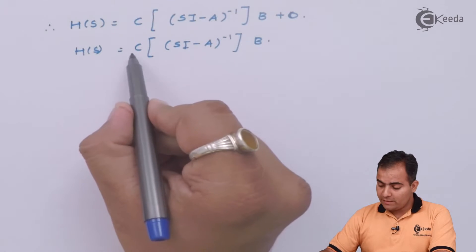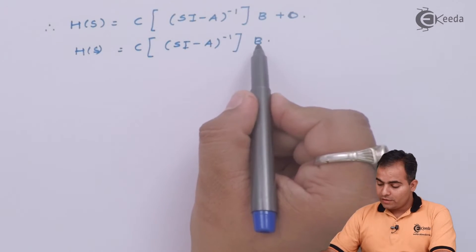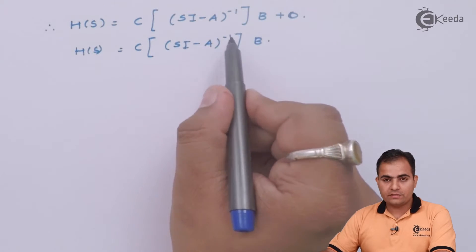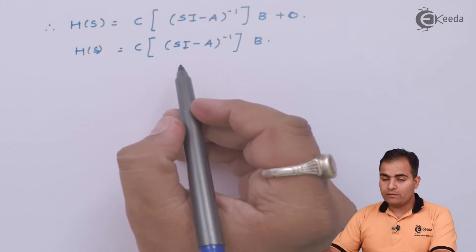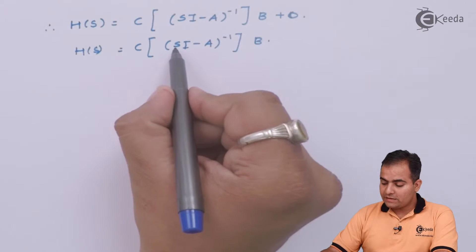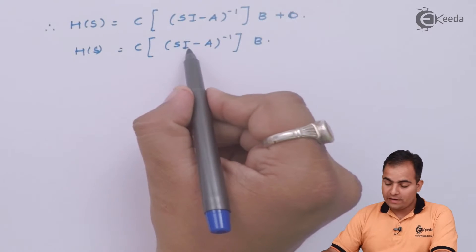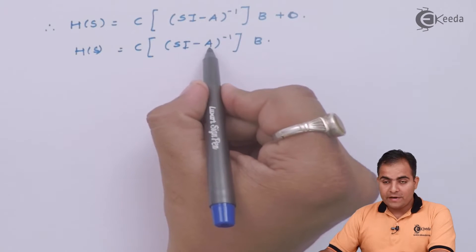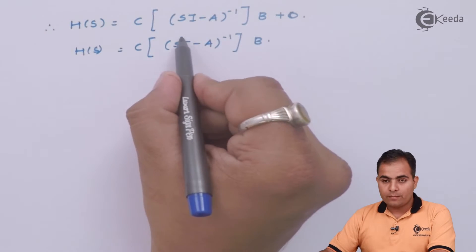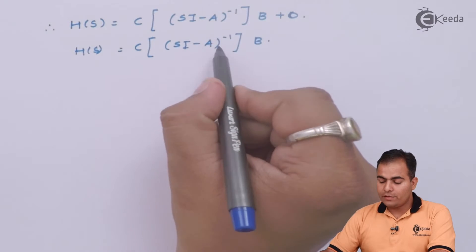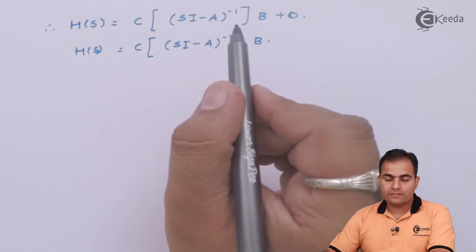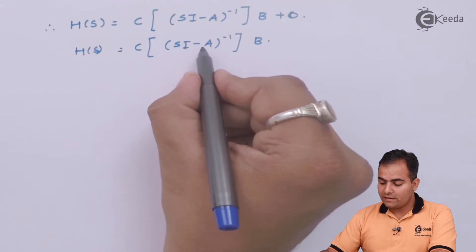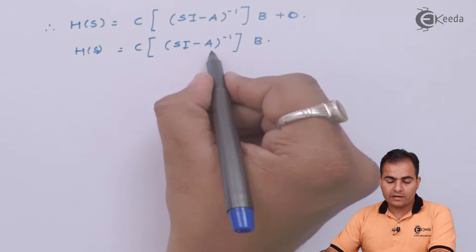Now we are going to substitute the C matrix and B matrix values, but first we need to find (sI - A)⁻¹. To do that, we multiply the scalar S with the identity matrix, then subtract the A matrix from that product, and then find the inverse of the result.